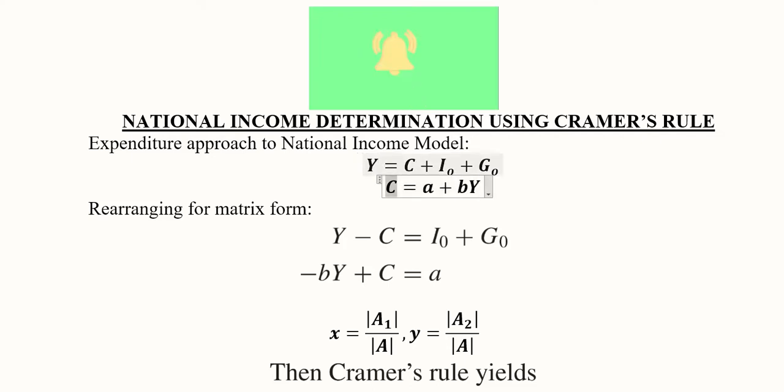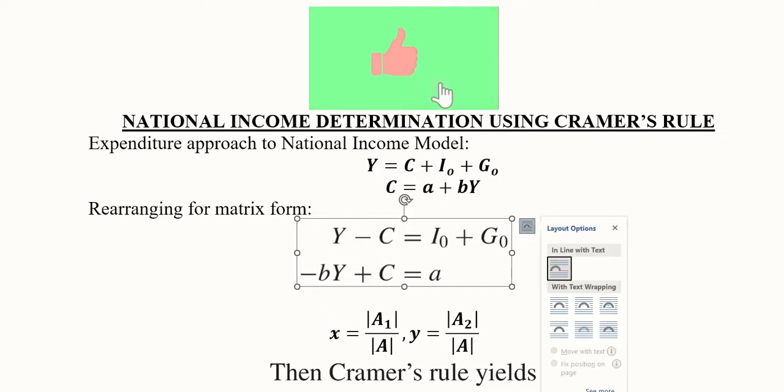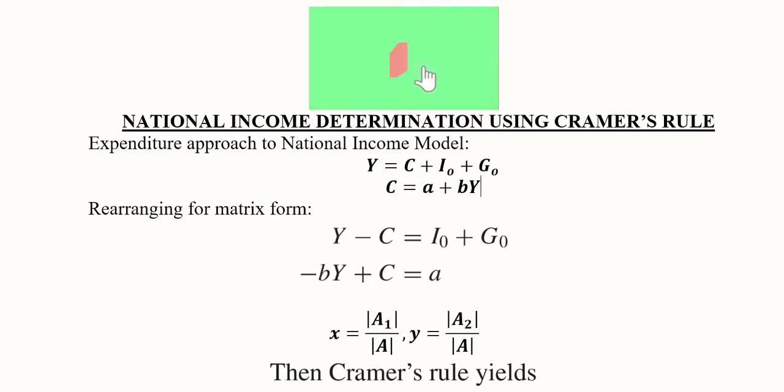I naught and G naught will remain the exogenous variables. Since we are going to use Cramer's approach, we have to write the system of equations in matrix form. Here we have rewritten them: Y minus C and minus bY plus C, and on the right-hand side you can see the constants.